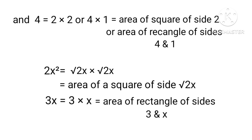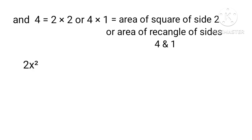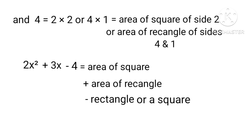Area of a square of side 2 or a rectangle of sides 4 and 1. So 2X² plus 3X minus 4 is an area of square plus a rectangle minus a rectangle or a square.